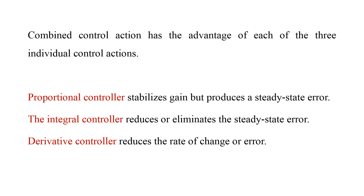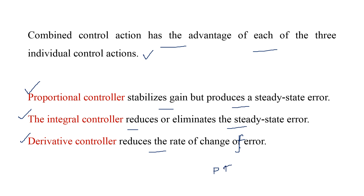The PID controller is a combination of three controllers — proportional, integral, and derivative — and has the advantage of each. Using the proportional action, we can stabilize the gain but it produces a constant steady state error. Using the integral action, we can reduce or eliminate the steady state error. Using the derivative action, we can reduce the rate of change of error. These three advantages are achieved together by using the PID controller. This concludes the discussion on different types of controllers and their advantages and disadvantages. Thank you.